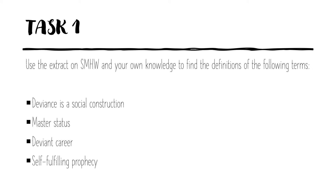First task: I've put an extract from the textbook on Show My Homework. Can you please use it to find the definitions of the following terms? What does it mean that deviance is a social construction? What do we mean by the term master status? What do we mean by deviant career? And what is a self-fulfilling prophecy? A couple of those you should know, a couple are new. Make sure you've got a definition for each and then pick up on the next slide.